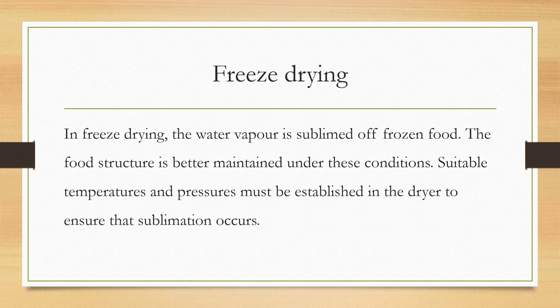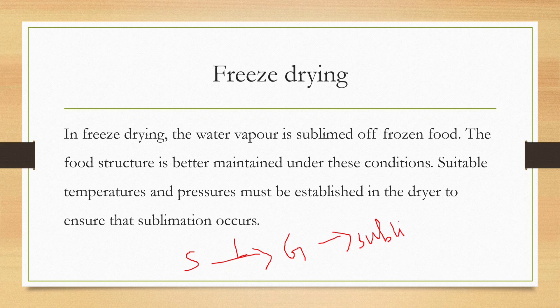Freeze drying involves removing water through sublimation — where a solid turns to a gaseous phase without passing through the liquid phase. In freeze drying, sublimation takes place: the frozen food is subjected to a particular temperature and pressure so that the water vapor is removed or sublimed from the frozen food product.